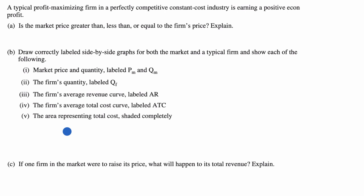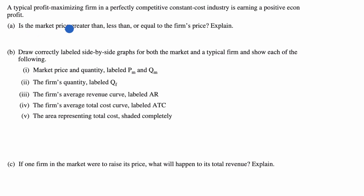Here's a type of question that you might see on an AP economics exam — it's talking about perfectly competitive markets. It says a typical profit-maximizing firm in a perfectly competitive constant cost industry is earning a positive economic profit. The first question asks: is the market price greater than, less than, or equal to the firm's price? Explain.